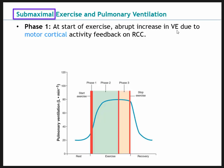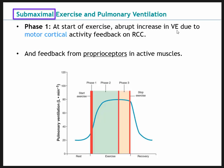The abrupt increase in pulmonary ventilation (VE) is due to motor cortical activity and the feedback it gives the respiratory control center. Your brain's motor cortex recognizes your movement pattern and sends that information to the medulla, which increases ventilation. We also have feedback from proprioceptors in muscles — muscle spindles and GTOs — also active and sending feedback to the medulla. Feedback from these areas increases ventilation from 20 to 40 liters per minute in phase one.